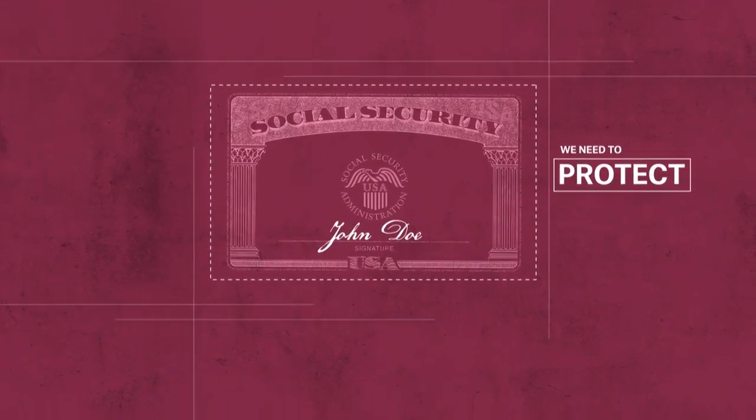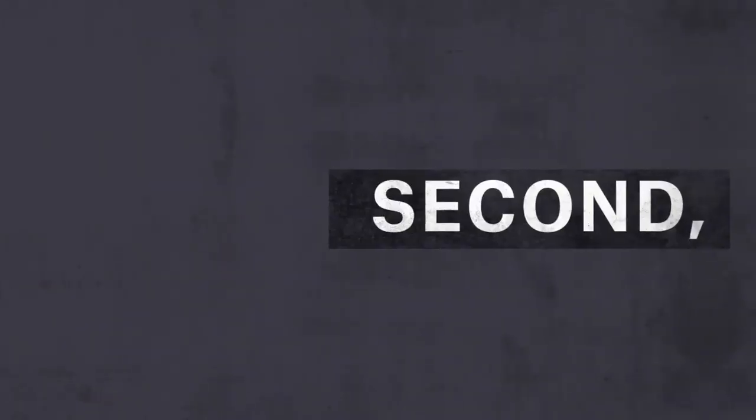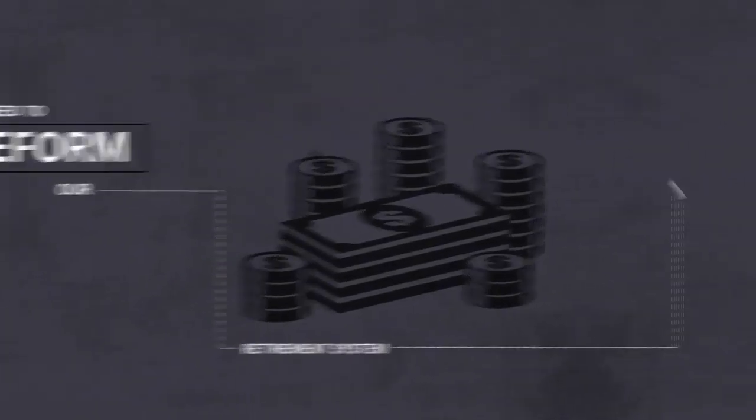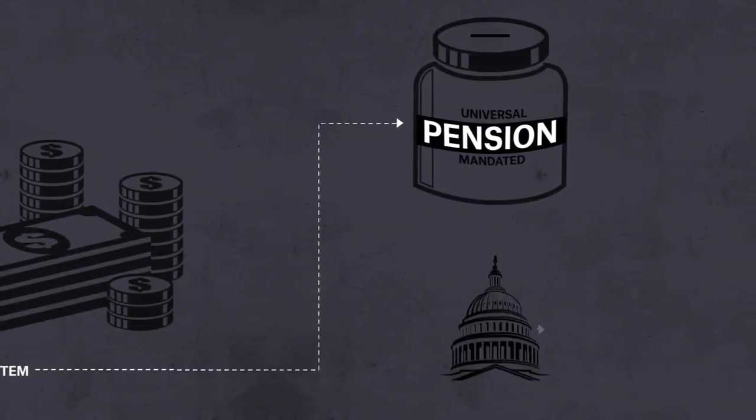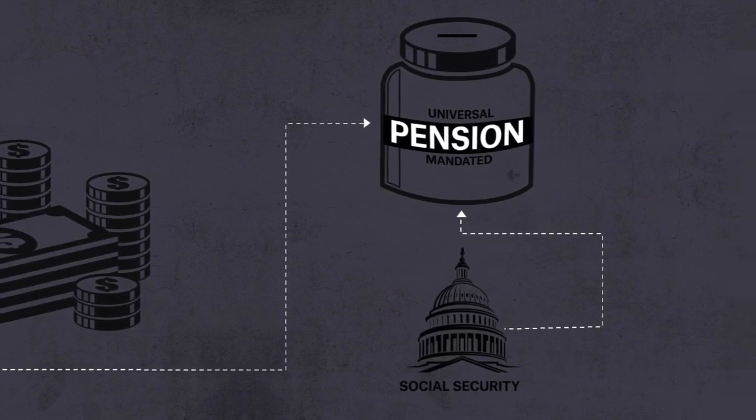First, we need to protect Social Security for this and future generations. Second, we need to reform our retirement system. We need a universal, mandated pension system that sits on top of Social Security.